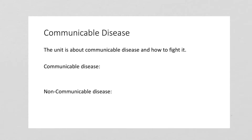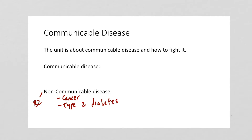First off, what is a communicable disease? The whole unit is about communicable diseases and how to fight them. In unit B2, you learned about non-communicable diseases, so you could naturally think that a communicable disease is going to be something different. Some non-communicable diseases you learned about in B2 included cancer and type 2 diabetes. Type 2 diabetes actually comes up in unit B5 as well, so it appears across quite a number of units.